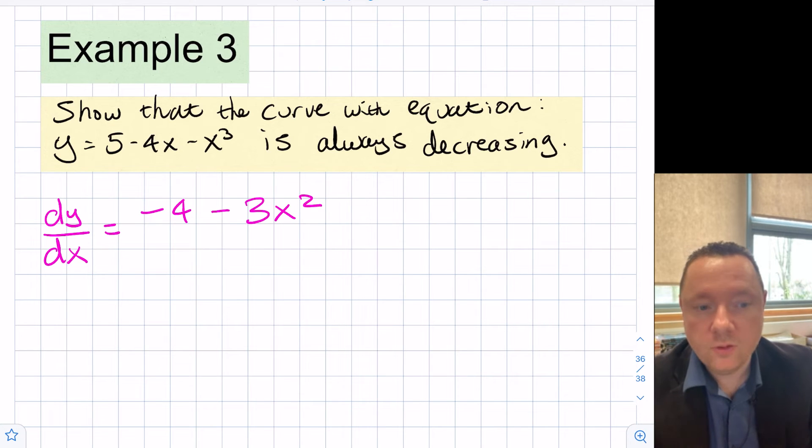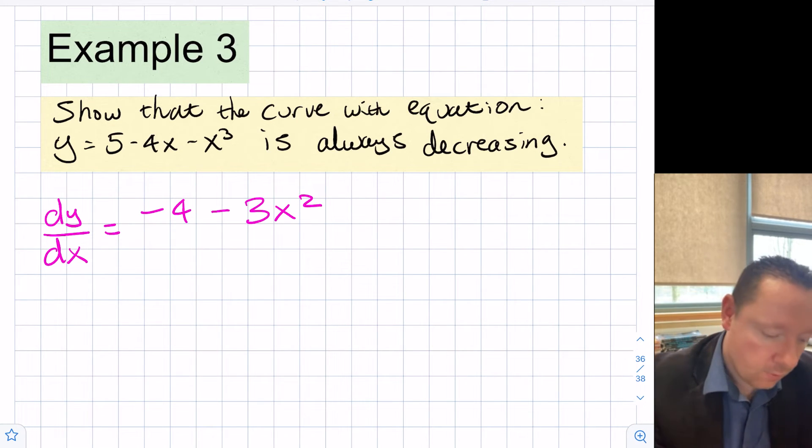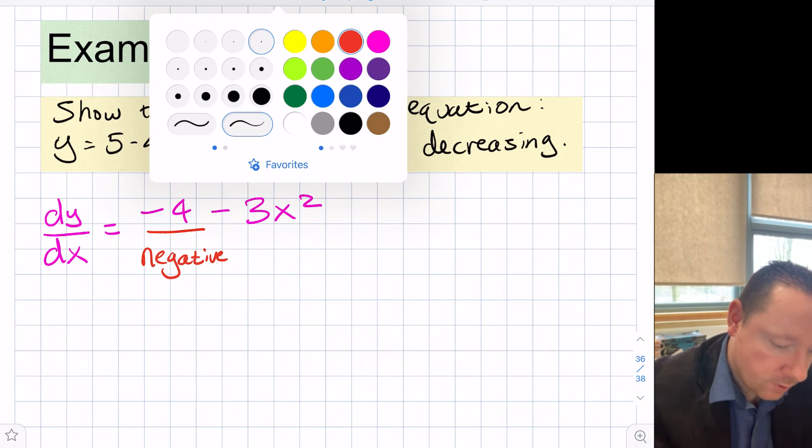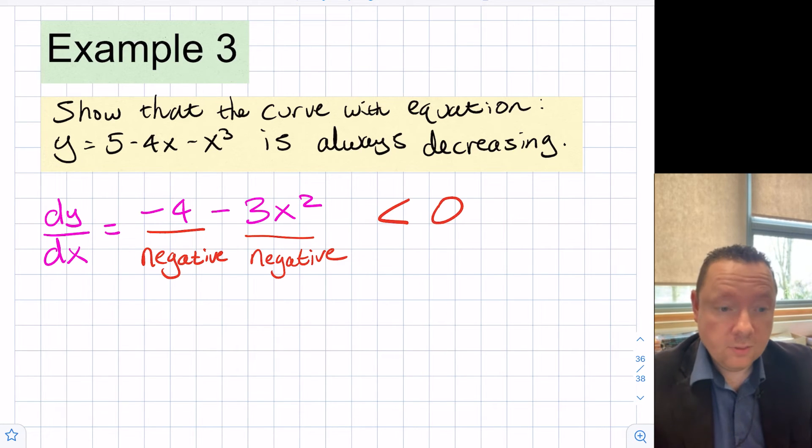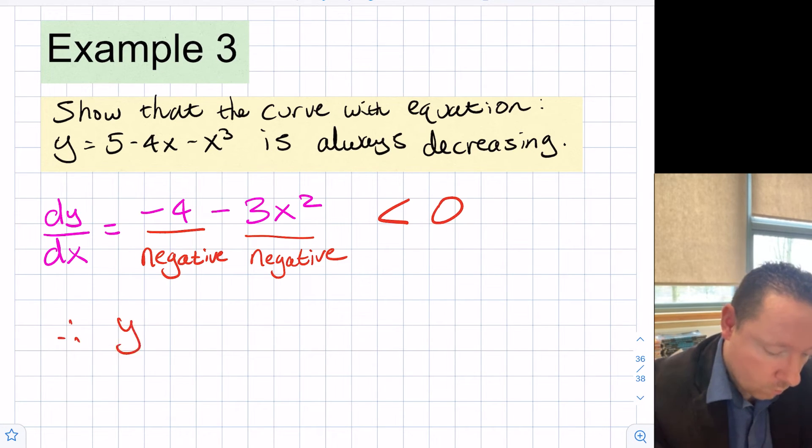We need to show that's always less than zero. Well that's quite easy to show. Minus 4 is always negative, and when you square a number that's positive, but then you times it by a negative number, so that's always negative. That means this is always less than zero. Therefore y equals 5 minus 4x minus x cubed is always decreasing.